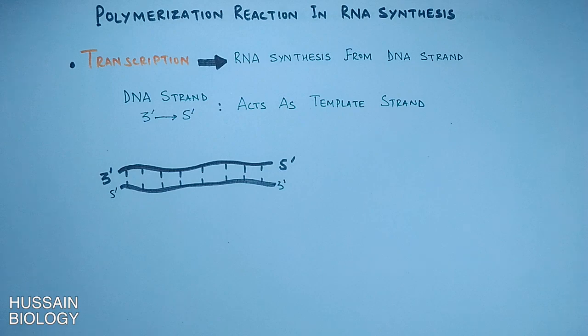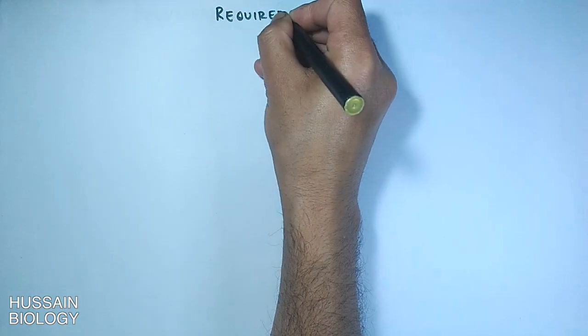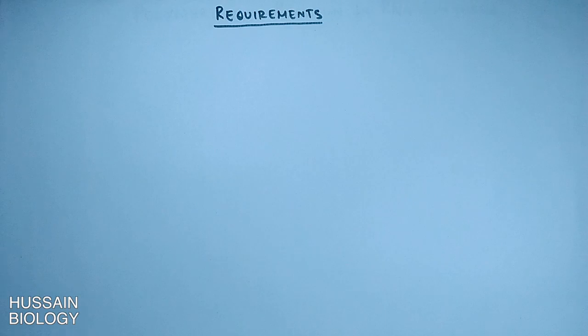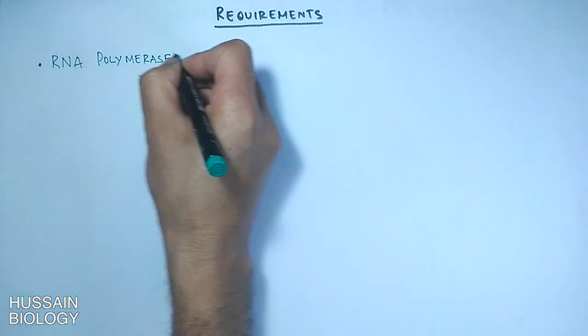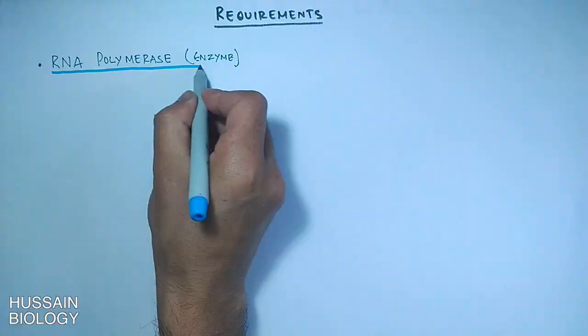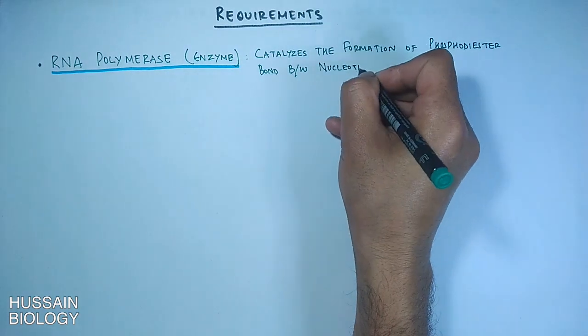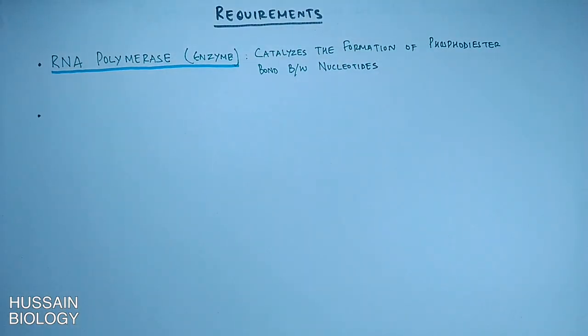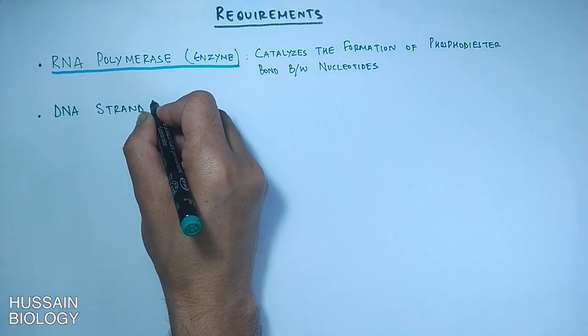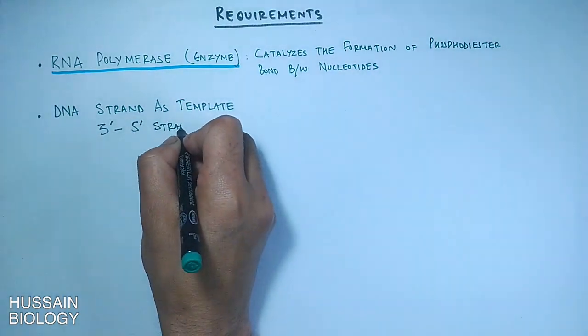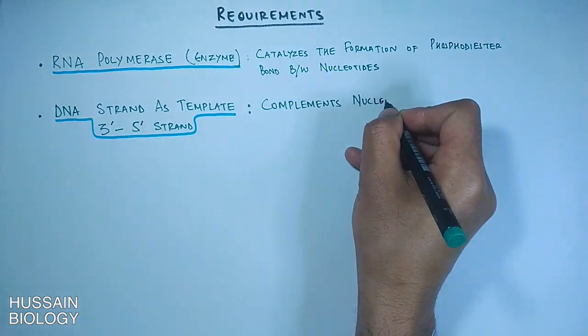Now let's see what are the requirements for the polymerization reaction during the process of transcription or RNA synthesis. First we have the RNA polymerase enzyme. This RNA polymerase enzyme catalyzes the formation of phosphodiester bonds between the nucleotides. Then we have a DNA strand running from three prime to five prime end that complements the nucleotides in RNA strand.